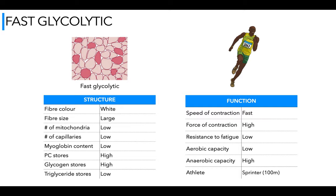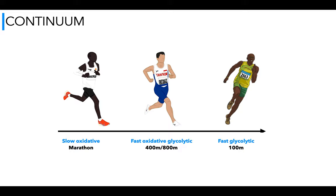Just to put that on a continuum: we move from slow oxidative to fast oxidative glycolytic and then fast glycolytic. That's an explanation of the structural and functional characteristics, which is what you're mainly asked to do in your exam and what this revision video is aimed at. There are more in-depth videos out there covering recruitment of fibers, all-or-nothing, and things like that, but this is what we're required to revise. Hope it helps — thank you.